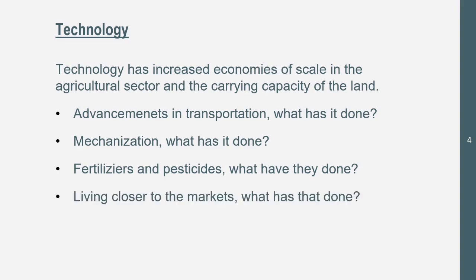Living closer to markets — this has allowed food to go to the markets quicker, allowing farmers to sell their stuff and make money. All four of these factors have helped increase economies of scale in the agricultural sector and the carrying capacity of the land. The carrying capacity is how much something can sustain without damage — we see this most with fertilizers, pesticides, and living closer to the markets. Farmers may not even have to live on their farm anymore.